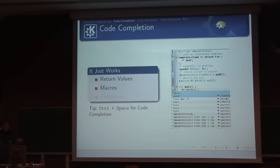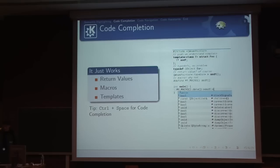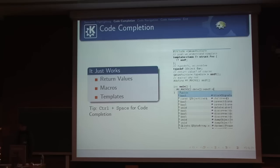For us, using a macro is the same as if you wrote the function call directly. We also understand template code: QWeakPointer is a pointer of a Foo class with a Bar in there, and Bar is just a typedef to QObject. We understand all of that and show you the correct code completion. This really helps you write code very fast.